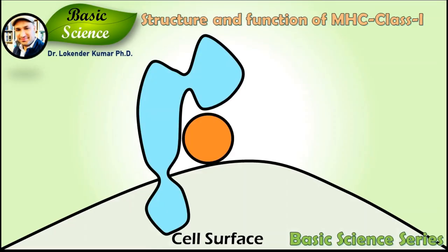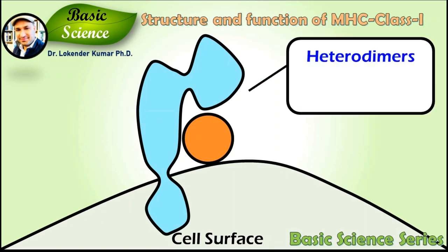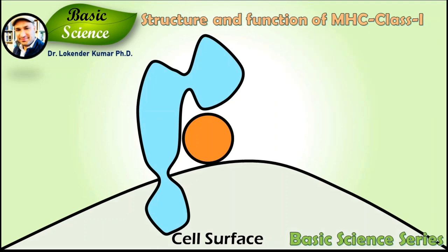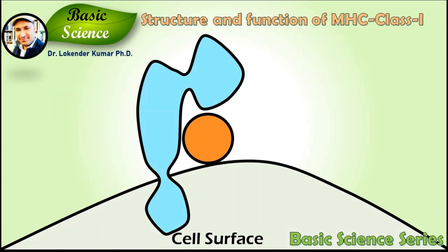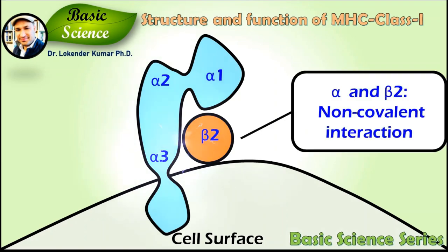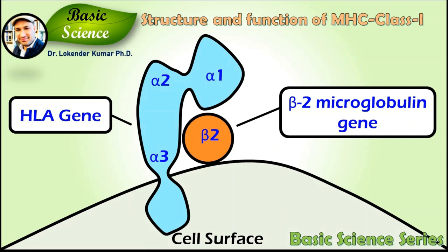MHC class 1 molecules are heterodimers, meaning they consist of two polypeptide chains: the alpha chain and the beta-2 microglobulin chain. The alpha chain contains three domains: alpha 1, alpha 2, and alpha 3. The alpha and beta-2 microglobulin chains are linked non-covalently via interaction of beta-2 microglobulin and the alpha 3 domain. The alpha chain is encoded by an HLA gene, while the beta-2 microglobulin unit is encoded by the beta-2 microglobulin gene.